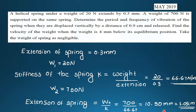Setting up the problem: a spring with a 20 Newton weight produces an extension of 0.3 mm. We first find the stiffness of the spring using this relationship.